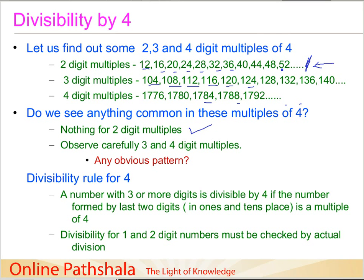Now let's look at the three-digit multiples — do we see any pattern? A hint: just try observing the last two digits of these three-digit multiples. We have 04, 08, 12, 16, 20, 24, 28, 32. Do you see a pattern? This is 4, 8, 12, 16, 20, 24, 28 — bingo! The last two digits in the three-digit multiples are themselves multiples of 4.